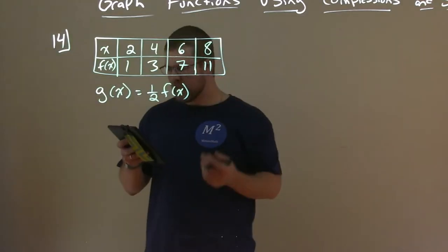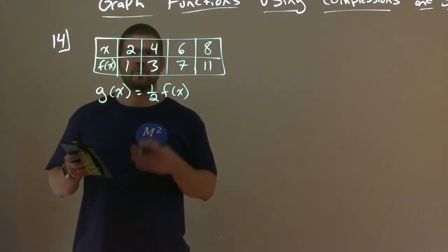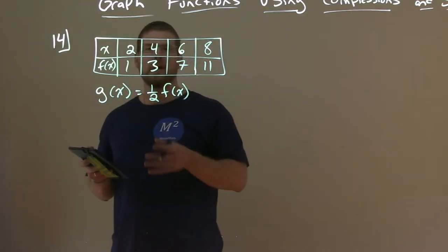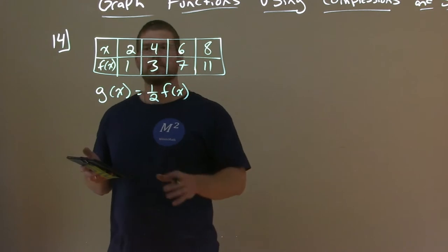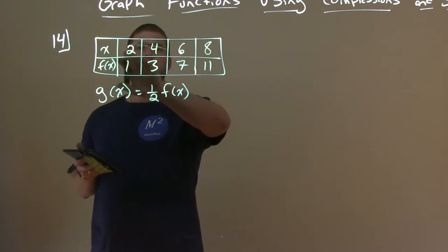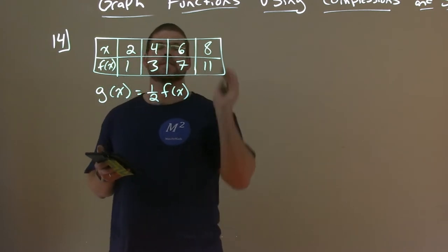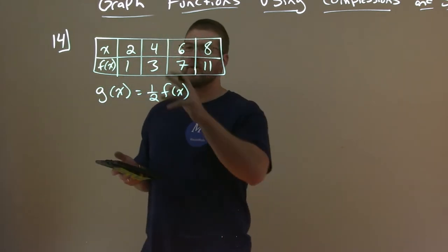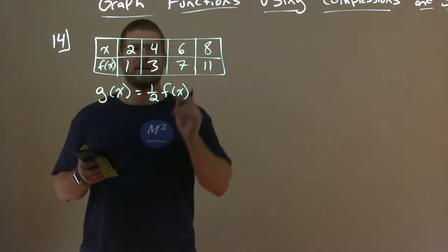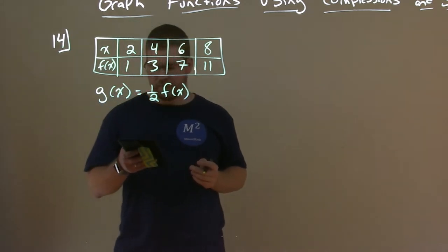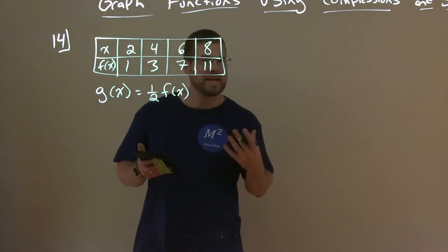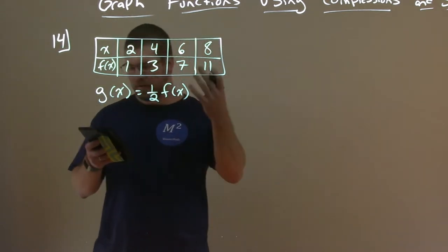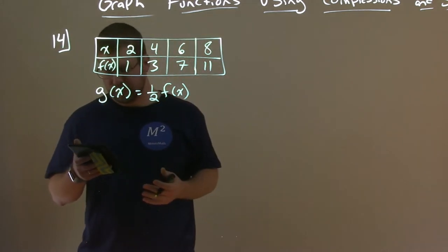We're given a table here for f of x. We don't know what the specific function is, but we know our inputs are 2, 4, 6, and 8, and the corresponding outputs are 1, 3, 7, and 11. And we want to make a table here for g of x.